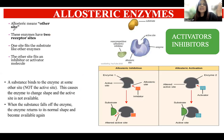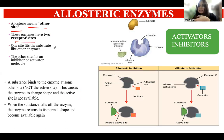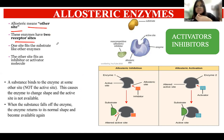Allosteric means 'other site.' These allosteric enzymes have two receptor sites: one for the positive modulator and one for the negative modulator.